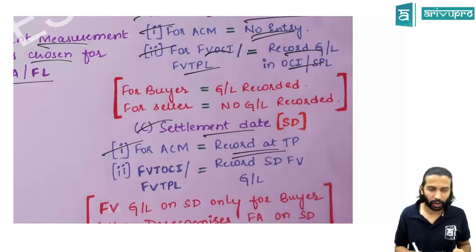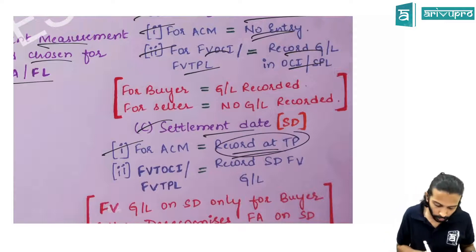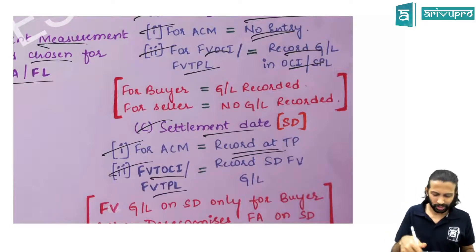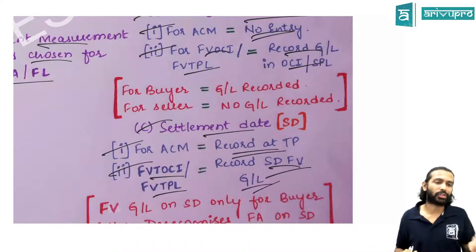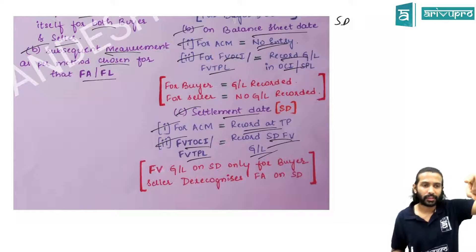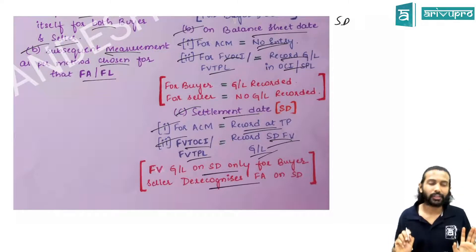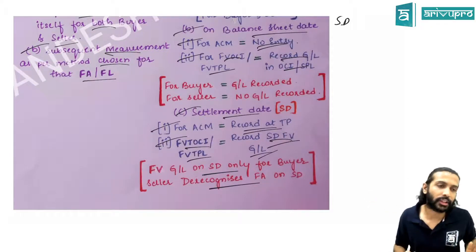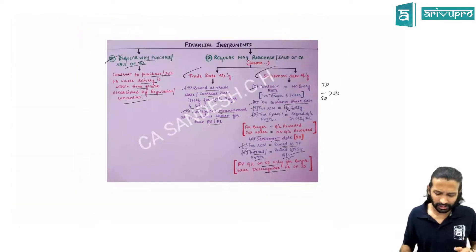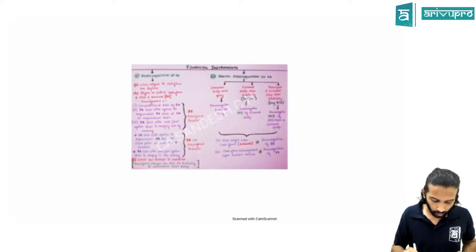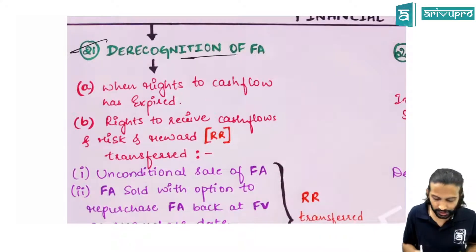Under settlement date accounting, on the settlement date, the asset or liability is finally recorded (for ACM: record now since not yet done). The seller does not record fair value gain or loss — he only compares the carrying amount of the asset with the selling price to determine gain or loss. Fair value gain/loss is not relevant for the seller once the asset is sold.